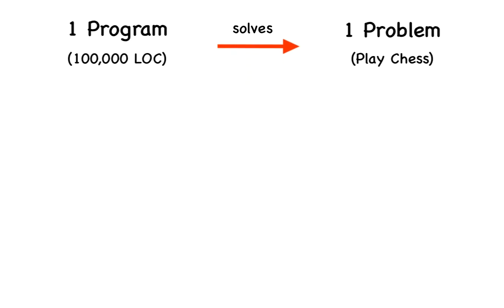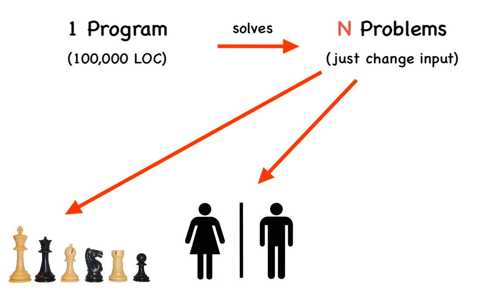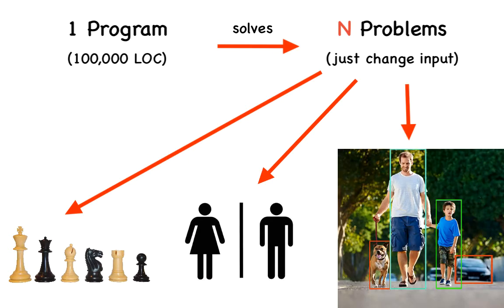Now, with machine learning on the other hand, you don't program for a specific algorithm to solve a specific problem. Instead, we program such that the same code can be used by just changing the input data. So the same code that plays chess is the same code that determines the gender of a person, and this is the same code that can identify objects in an image.